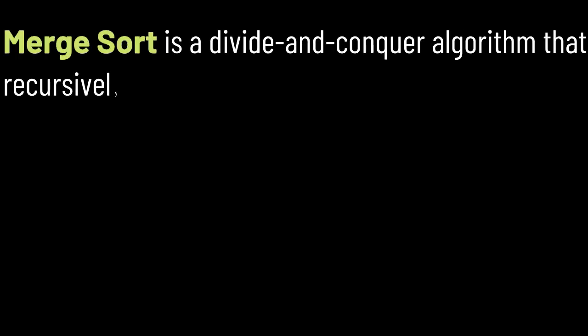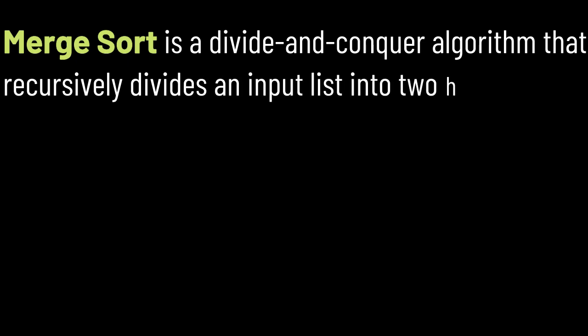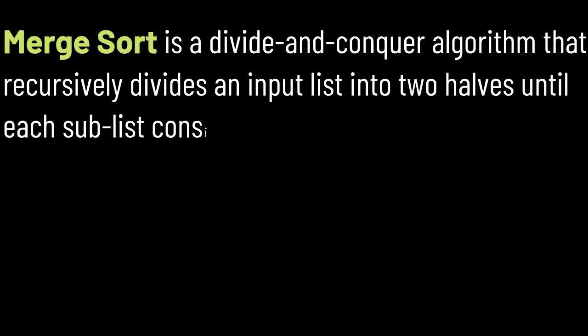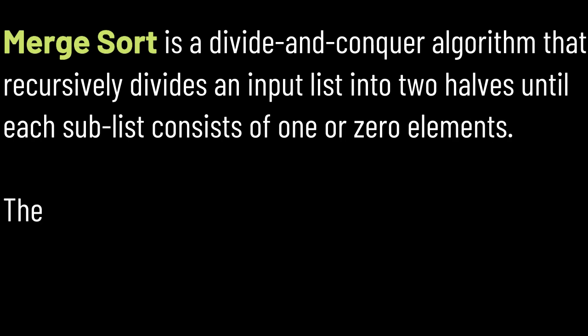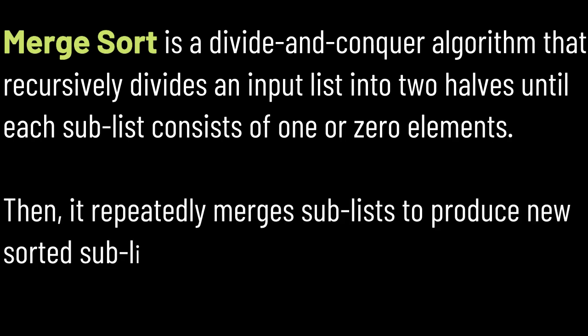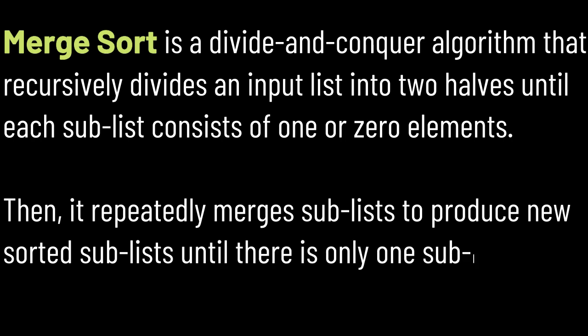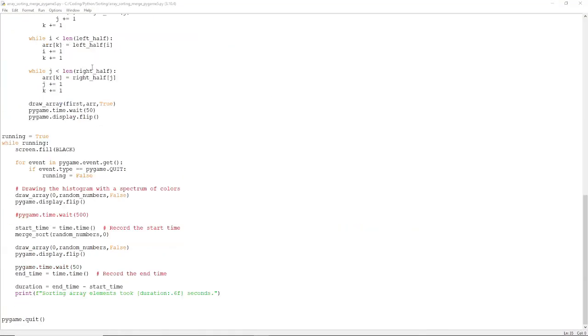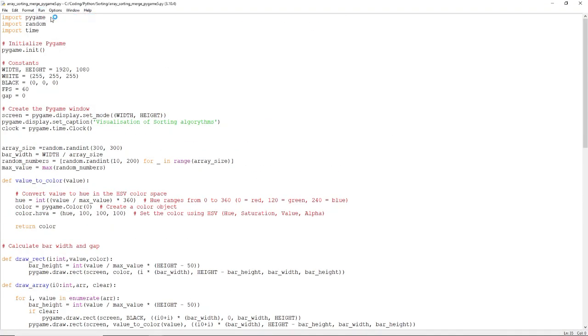Merge Sort is a divide-and-conquer algorithm that recursively divides an input list into two halves until each sublist consists of one or zero elements. Then, it repeatedly merges sublists to produce new sorted sublists until there is only one sublist, the sorted list. Here is the Python code to visualize the Merge Sort algorithm.